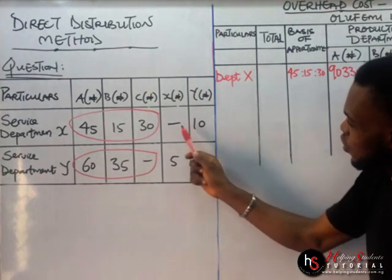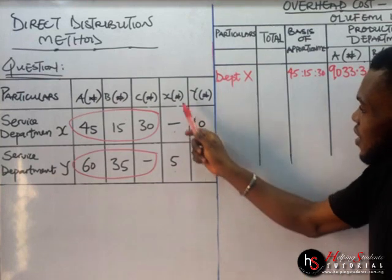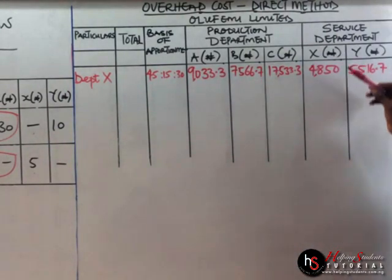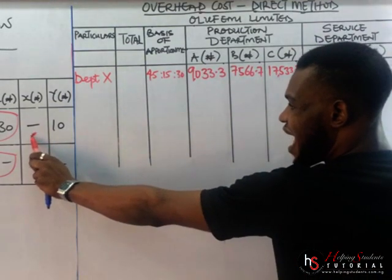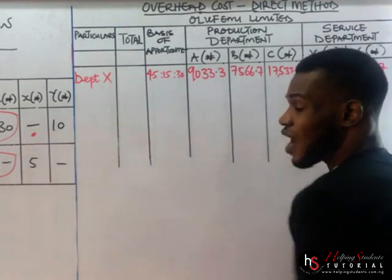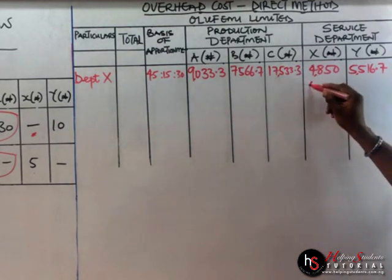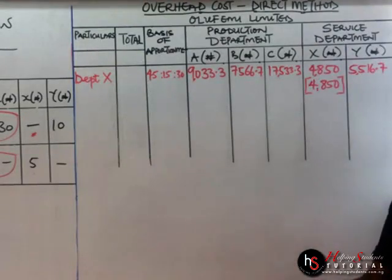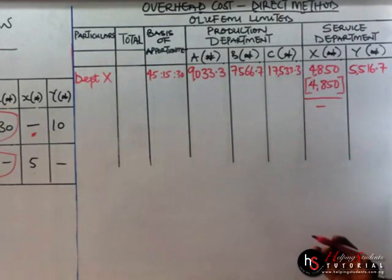You can see we don't have any figure here, but here we'll have 10, and here we'll have 5. There's no figure for service department X. So we come back to the question: for service department X, we'll have 450. For Y, we'll have the given value. This particular section where we don't have any value given — we come over to this place and bring down the value: 4,850. We subtract, just like in the repeated distribution method. So 4,850 minus 4,850 equals zero.